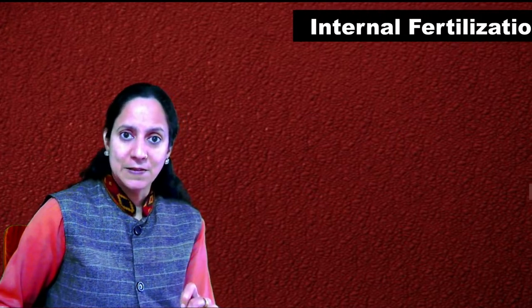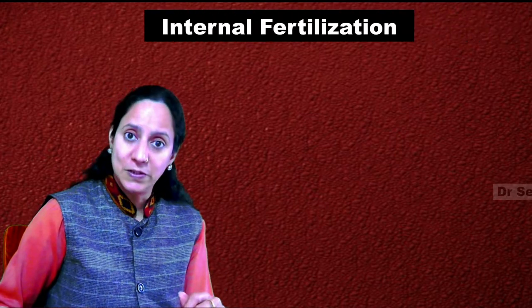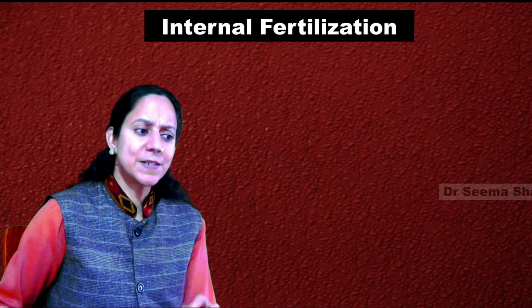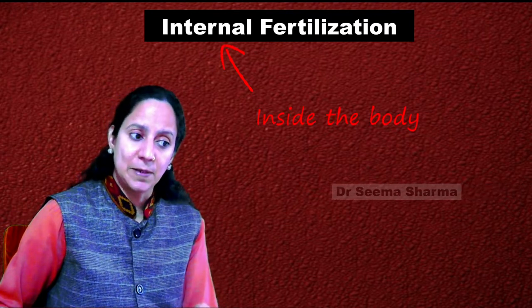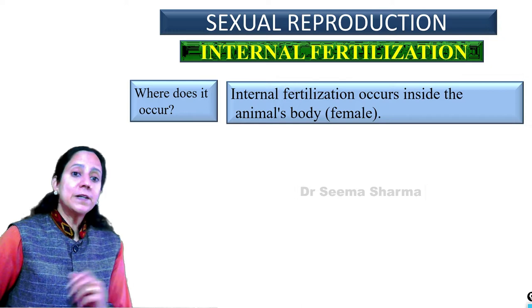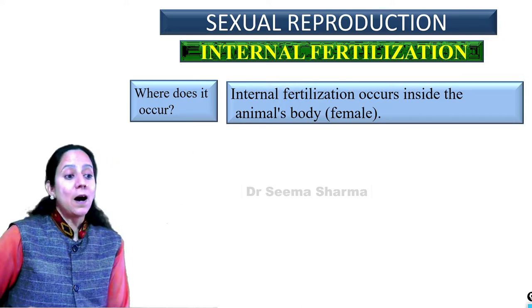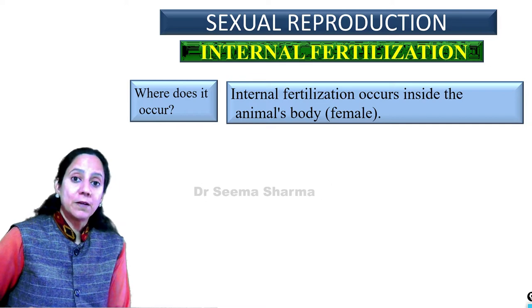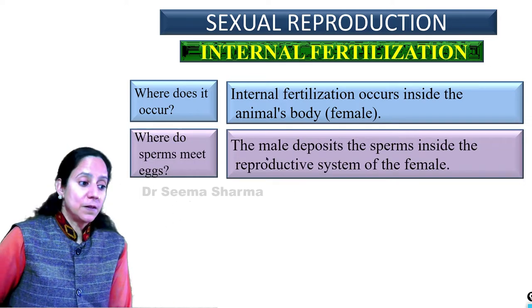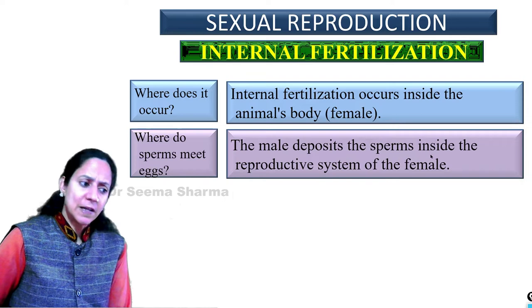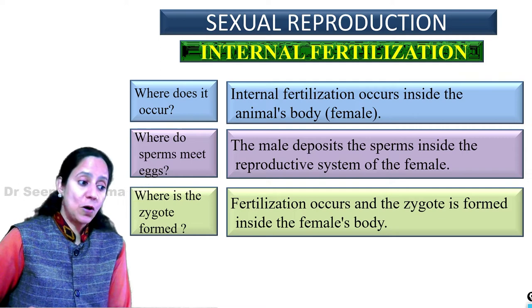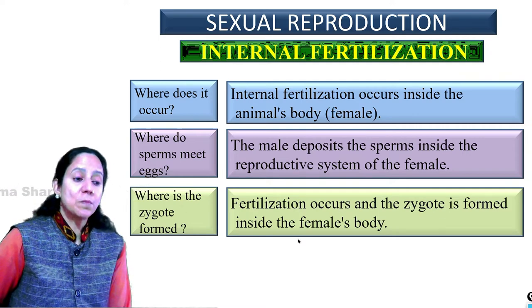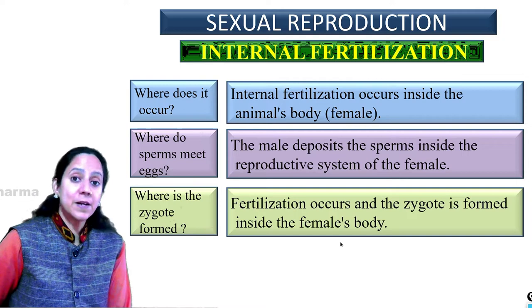Now, coming to the next type: internal fertilization. Internal means inside the body of the animal. Internal fertilization occurs inside the female's body. The male deposits the sperm inside the reproductive system of the female, and fertilization occurs with the zygote formed inside the female's reproductive system.